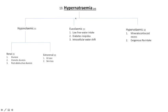On the left, hypovolemic hyponatremia has five causes — three renal and two extra-renal. The three renal causes are overzealous diuresis, osmotic diuresis, and post-obstructive diuresis — three diuretic situations. Extra-renal hypovolemic hyponatremia can be attributed to GI losses such as vomiting and diarrhea, and skin losses.